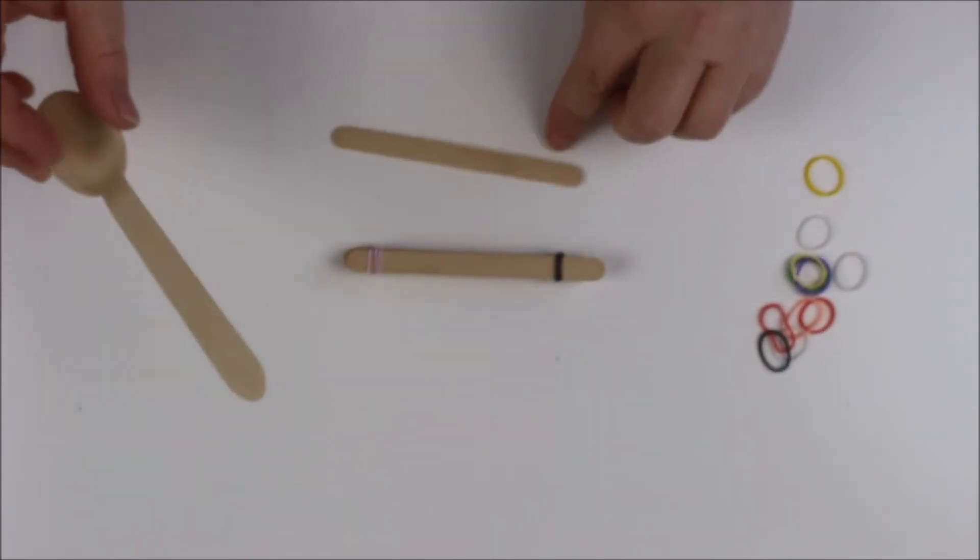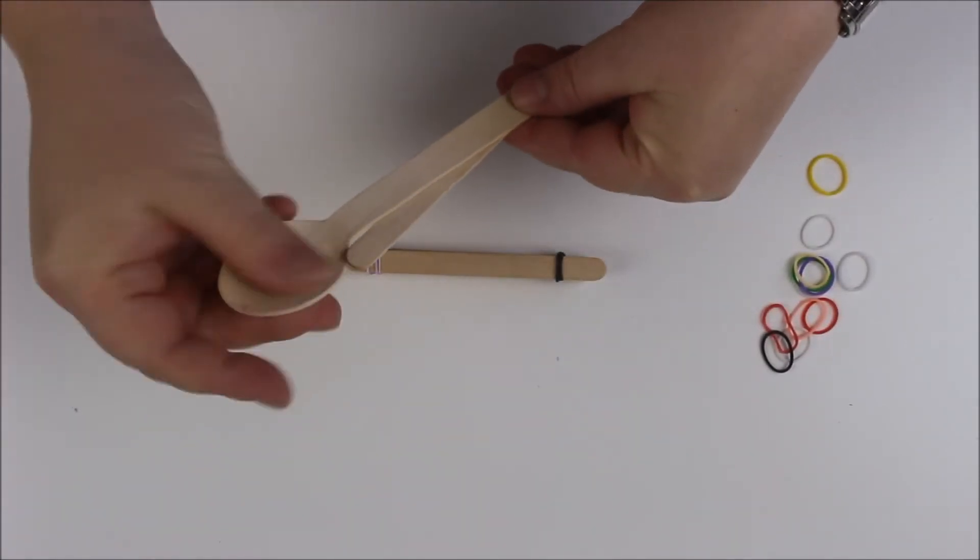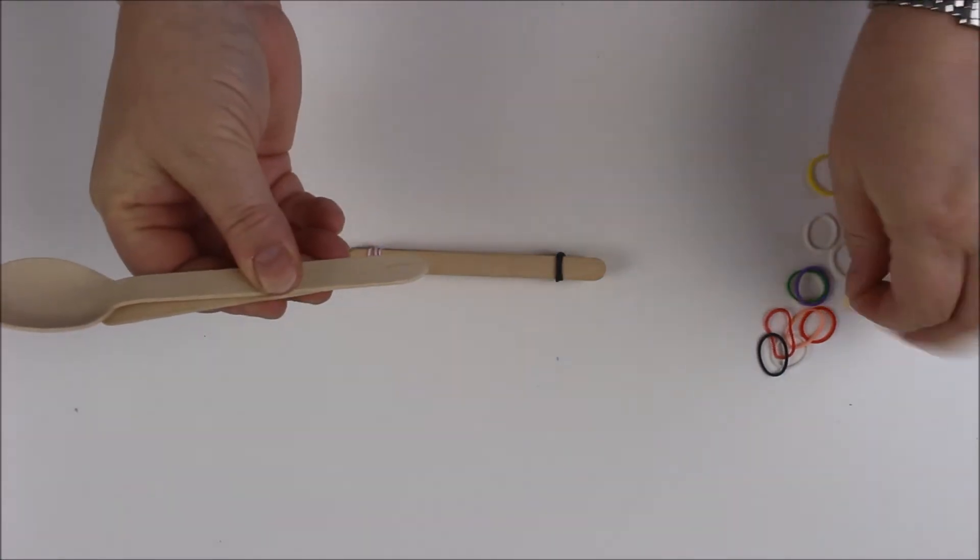Then we're going to take another lolly stick and a wooden spoon and we're going to attach those at the bottom again using a loom band.